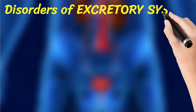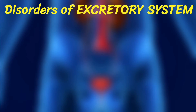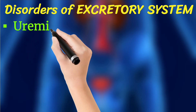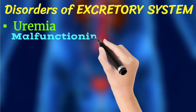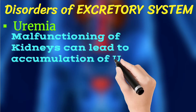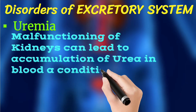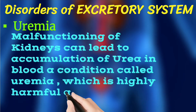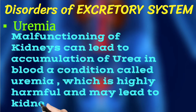The first disorder of the excretory system is uremia. Malfunctioning of the kidneys can lead to accumulation of urea in the blood — a condition called uremia — which is highly harmful and may lead to kidney failure.